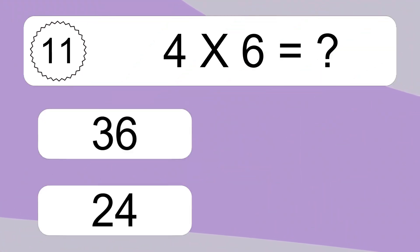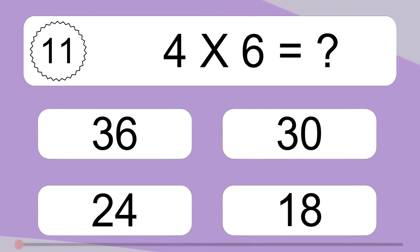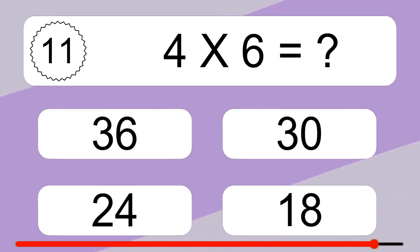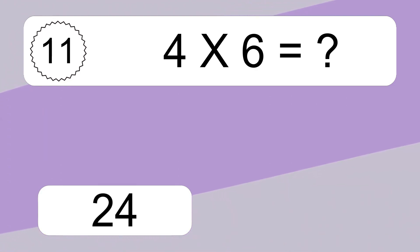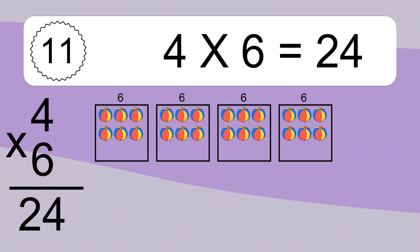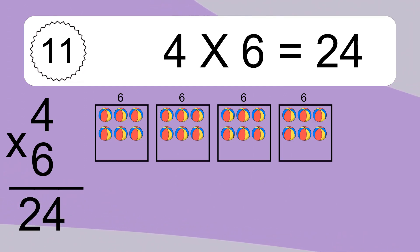4 times 6 equals what? 4 times 6 equals 24. We have 4 boxes and each box has 6 colorful balls inside. If you count all the balls in all the boxes together, you will have 4 times 6 balls. This equals 24 balls.